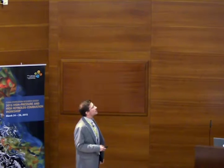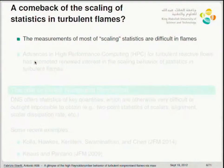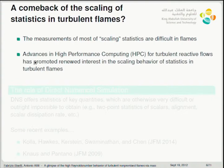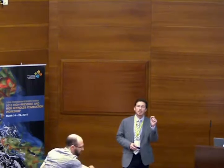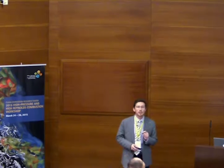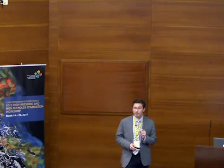The answer probably depends on the quantity — we've already seen this in the scaling of NOx, which is more sensitive to large scales, versus the scaling of extinction, which is more sensitive to excursions of the scalar dissipation rate. Measuring these scaling statistics in flames is very difficult. Advances in high-performance computing for turbulent reactive flows have promoted a renewed interest in scaling behavior, and for selected configurations we're starting to enter the region where the asymptotic limit may apply.